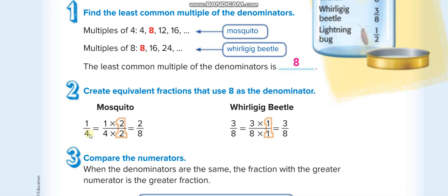We have two fractions: 1 over 4 and 3 over 8. We'll do the first example by making the denominator the same, and then the next example by making the numerators the same. Now, how do we make the denominator the same? By using the least common multiple.